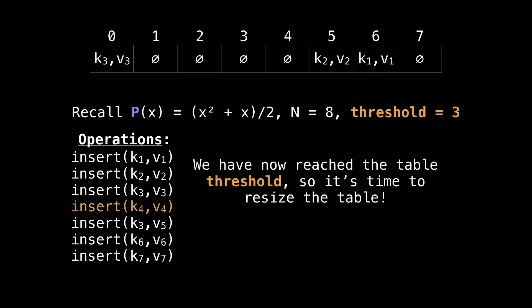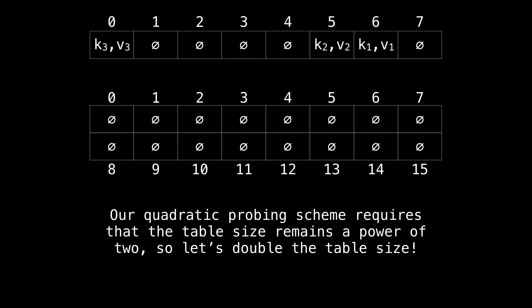Let's insert k4. Oh, but before we can do that, we've reached the table threshold, so we have to resize the table first. Okay, so let's allocate a new block of memory, and let's double the size of the table to keep it a power of 2.